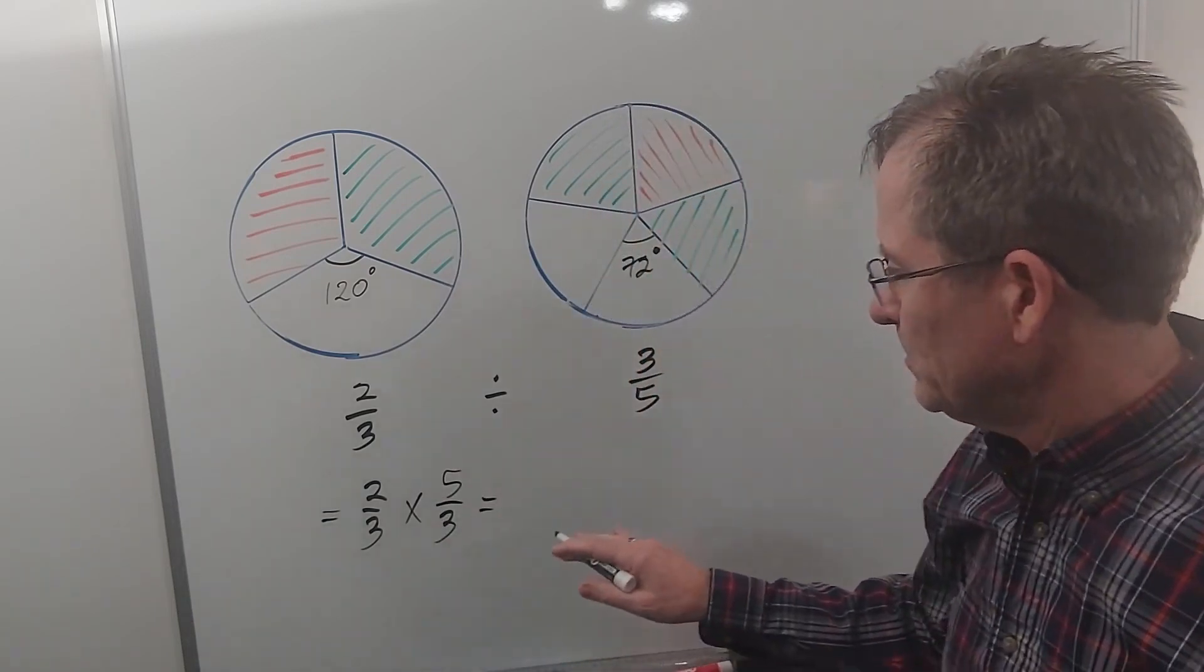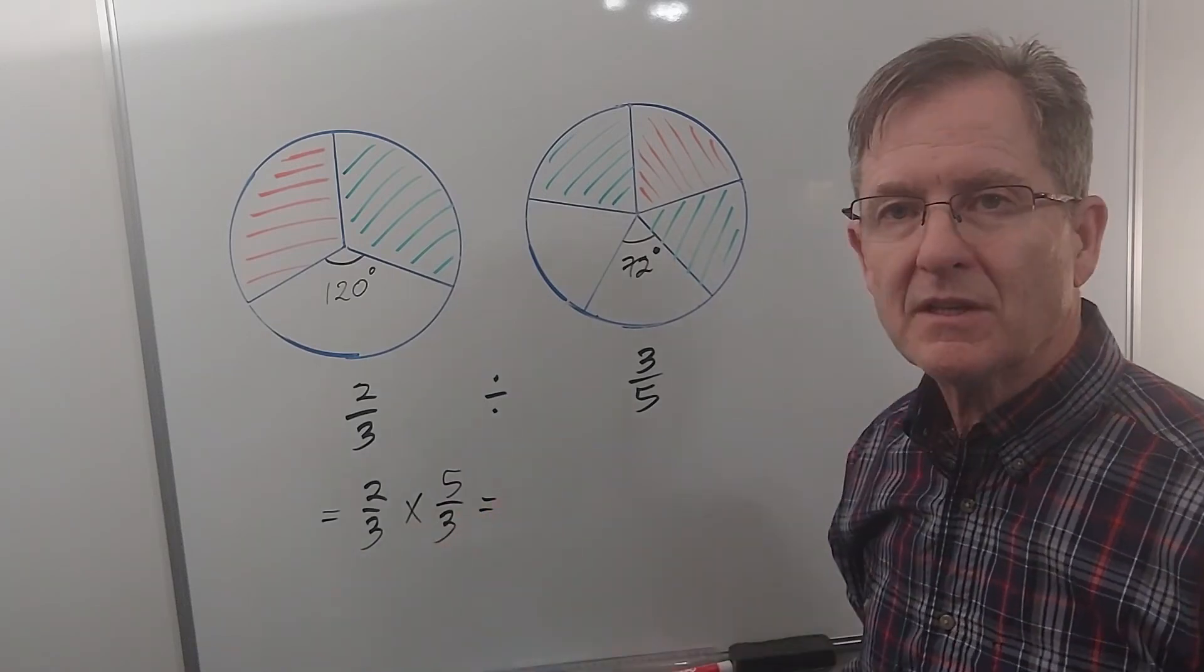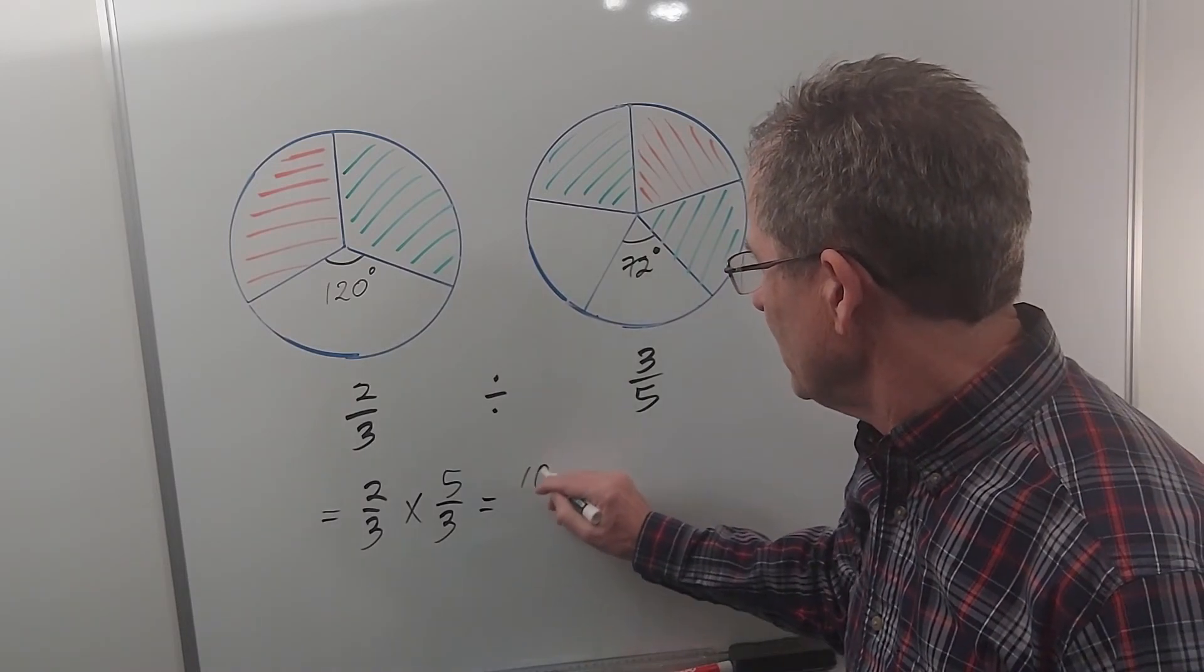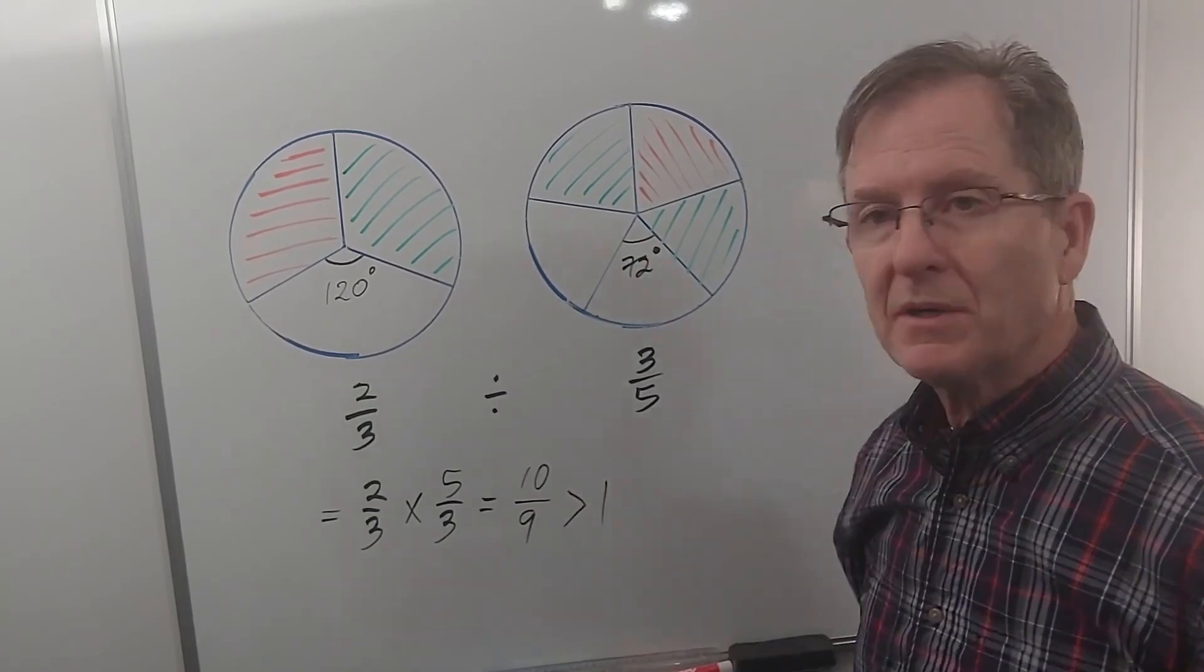Now before I multiply the numbers it's better if I reduce if I can, but nothing in the bottom divides into anything on the top. So I just go ahead and multiply. I get 2 times 5 on the top, 10, 3 times 3 on the bottom, 9, and sure enough that's bigger than 1 as predicted.